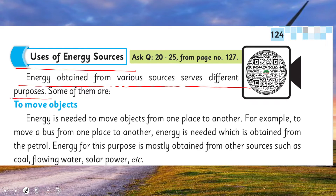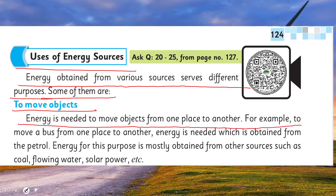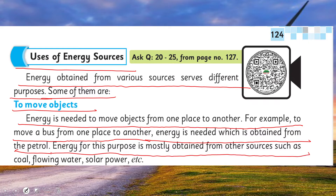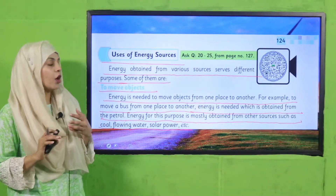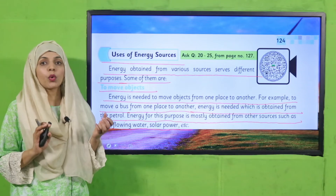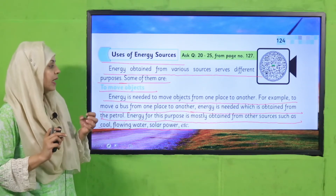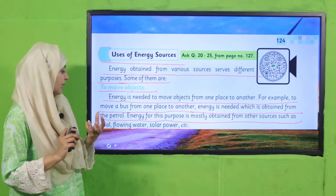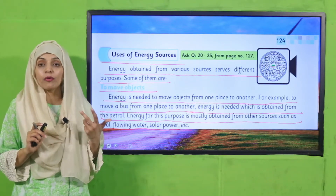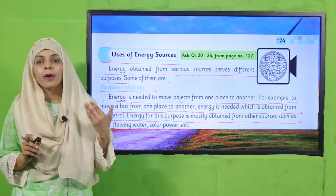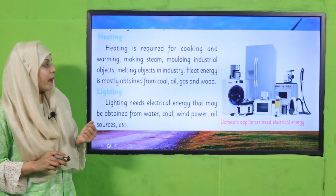Some of them are: to move objects — energy is needed to move objects from one place to another. For example, to move a bus from one place to another, energy is needed which is obtained from petrol. Energy for this purpose is also obtained from other sources such as coal, flowing water, and solar power. To move non-living things like a bus or car, fuel is required, and energy can come from multiple sources.